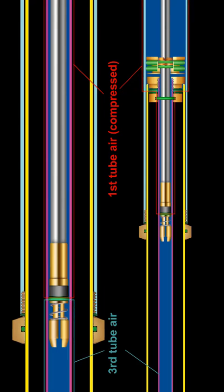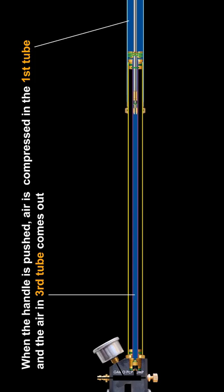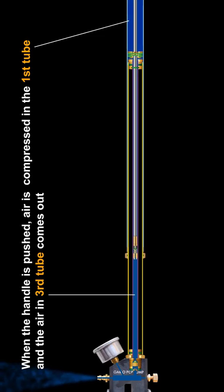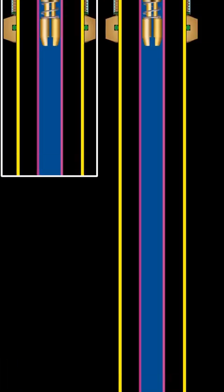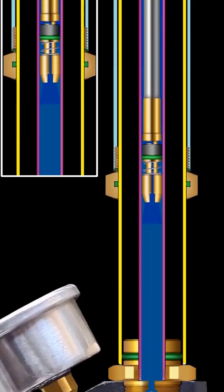Air in the first tube is compressed while third tube air comes out through the outlet valve. First tube pressure keeps increasing. Both pressures remain separated until the pressure of the first tube pushes the seal.